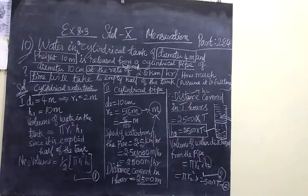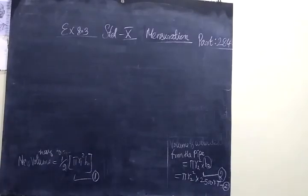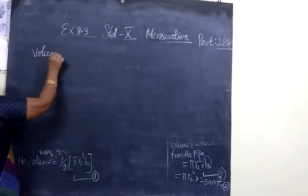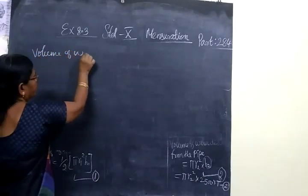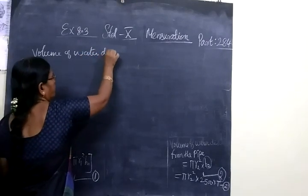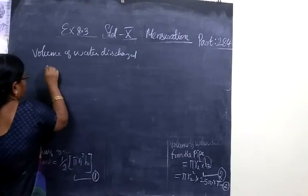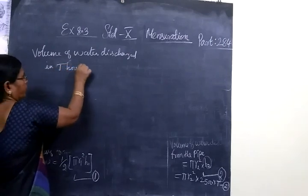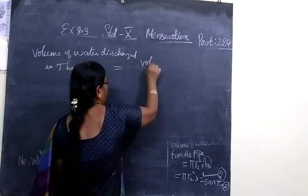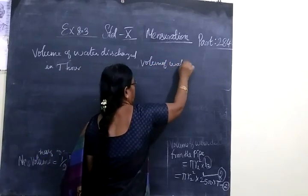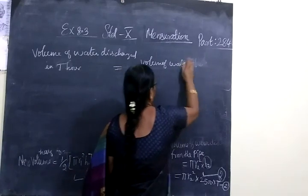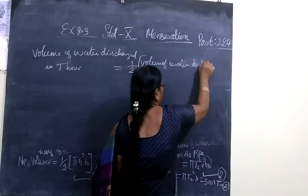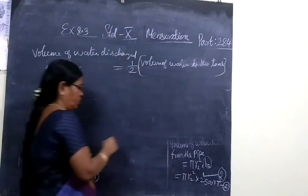Next we want to see, we are equating 1 and 2. That means volume of water in T hours equals volume of water, half of the tank. Half of the volume of water in the tank. So this equals.